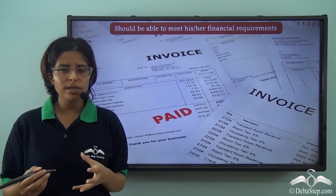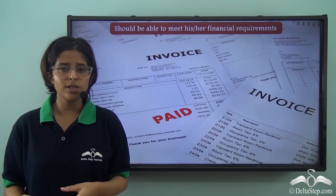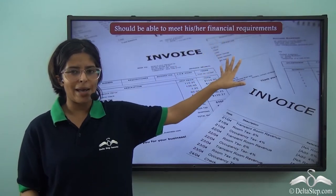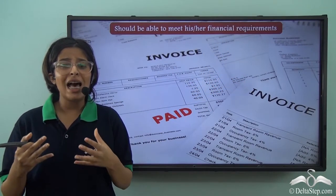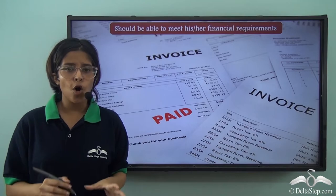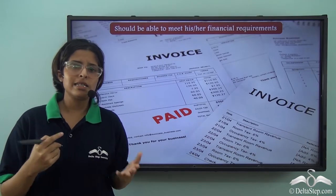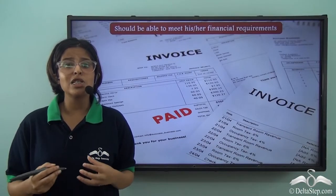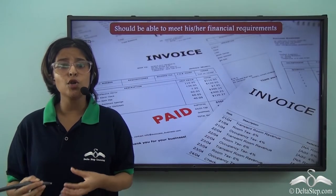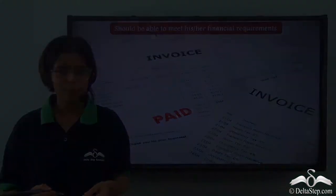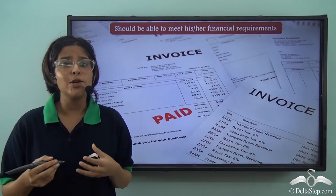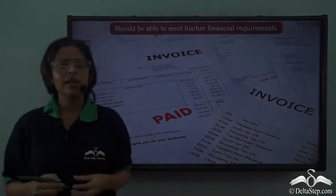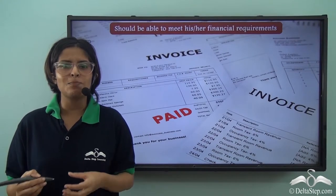The person contesting for Lok Sabha elections should also be able to meet their financial requirements. They must have a no-dues certificate from their electricity, telephone and other bills. This ensures the person is responsible and financially stable to become an MP, as owing money and not being able to pay dues on time is not a sign of a responsible citizen.